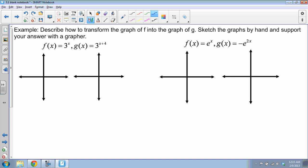Let's start on this. Describe how to transform the graph of f into the graph of g and sketch graphs by hand, supporting your answer with your calculator. To get from 3 to the x to 3 to the x plus 4, we're adding 4 to x, which is a shift opposite of 4. The opposite of positive 4 is negative 4, so shift left 4. That's the only transformation going on. So if I graph f of x equals 3 to the x, when I plug in 0 I get 1, when I plug in 1 I get 3.